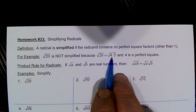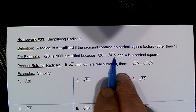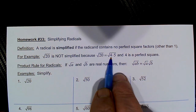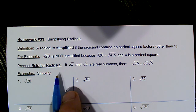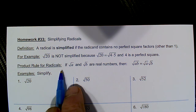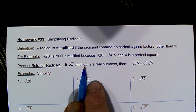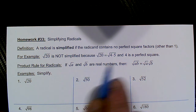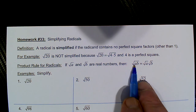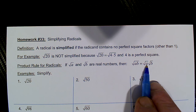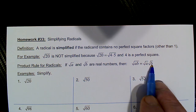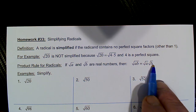We could break down the square root of 20 to be the product of the square root of 4 times 5, and 4 is a perfect square. Recall the product rule for radicals: if the square root of a and the square root of b are real numbers, then the square root of a times b can be broken down to be the product of the square root of a times the square root of b.